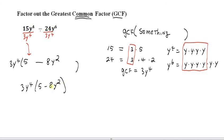Now, a quick check is always a good idea. If we distribute the 3y to the 4th through the parentheses, we should get back to the original problem, which it looks like we do. 3 times 5 is 15. y to the 4th, there's no additional y, so it's just going to be 15y to the 4th for the first term. 3 times negative 8 is negative 24. y to the 4th times y squared is y to the 6th. So that checks out. So this is the correct way to factor out the GCF from that original polynomial.